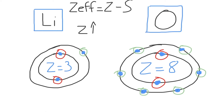Therefore, because the number of core electrons is the same as we move across the periodic table, the screening constant S will not change much. Because Z increases in this equation and S stays approximately constant, the effective nuclear charge will also increase, as Z and Z effective are directly proportional. This means effective nuclear charge increases as we move from left to right across a period.